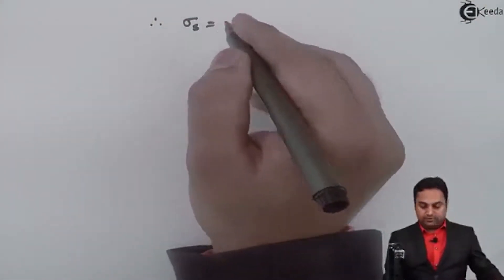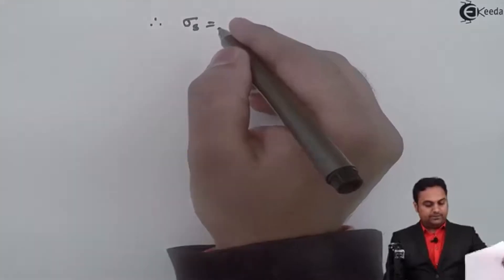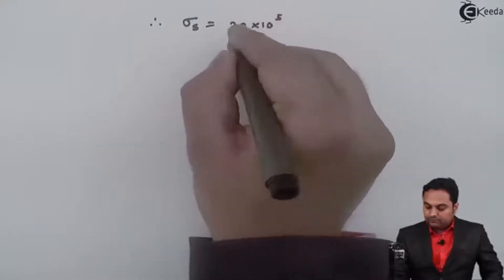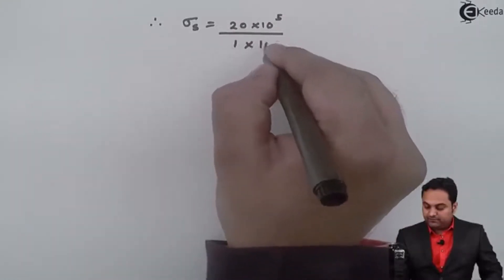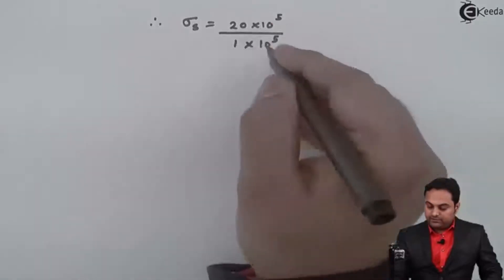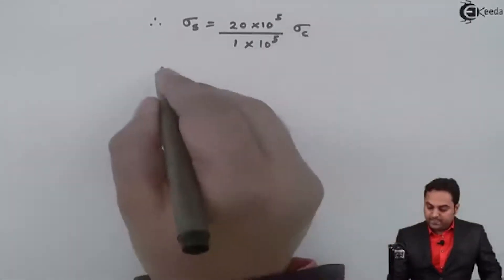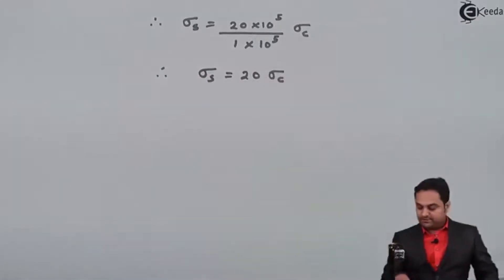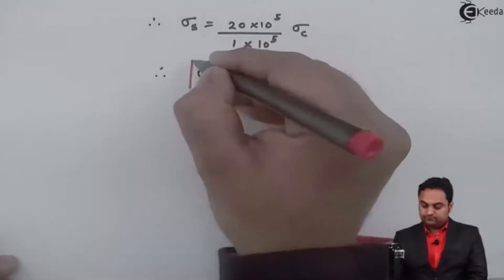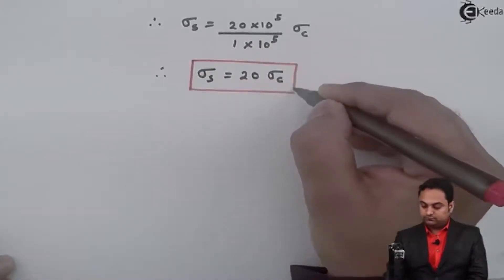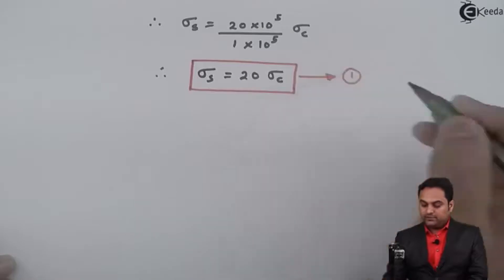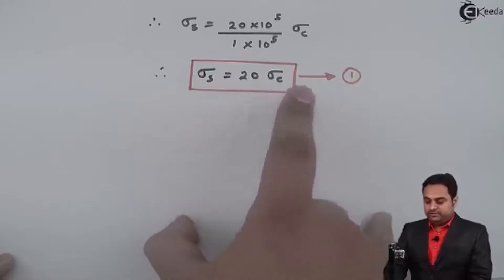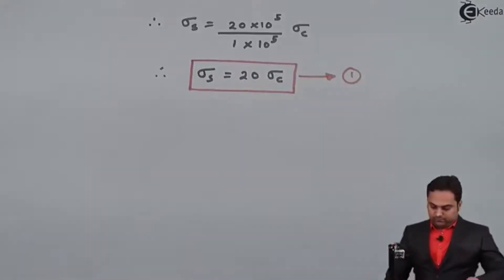Substituting the values: Young's modulus for steel is 20 × 10⁵ and for copper is 1 × 10⁵. Therefore, stress in steel = (20 × 10⁵ / 1 × 10⁵) × σ_c = 20 × σ_c. This is Equation 1 — stress in steel is 20 times the stress in copper.